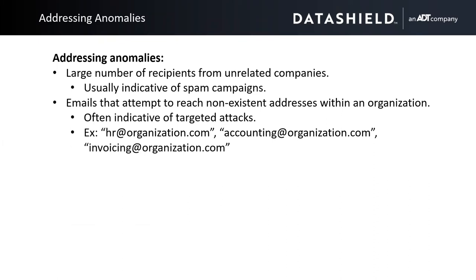So here we get into addressing anomalies. When you think about emails addressed within an organization, it's usually going to people you know within the same company. You might have a couple of different domains if two companies are working together. But a lot of times in spam campaigns — especially lower-effort ones, maybe put together by a script kiddie — they'll just blast it out to a giant chunk of email addresses. You'll see this huge block of addresses that don't seem related at all: official business emails, personal Gmail, Yahoo, Hotmail, all lumped together in the 'To' field. That's a pretty good indication it's some kind of spam attempt, just casting a really wide net.